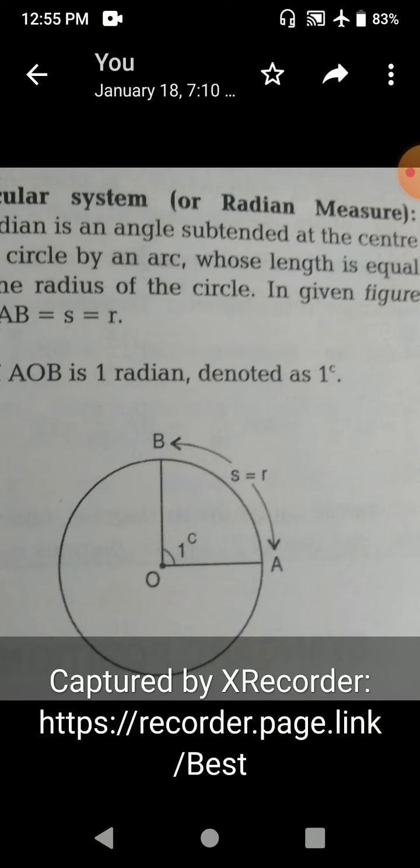If the arc length is equal to the radius, then it is 1 radian. So the figure shows that the angle is smaller than 90 degrees.